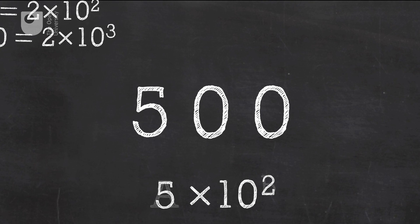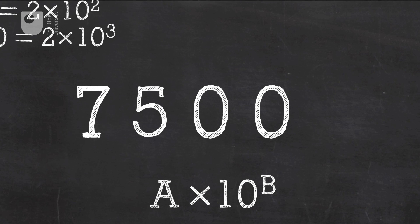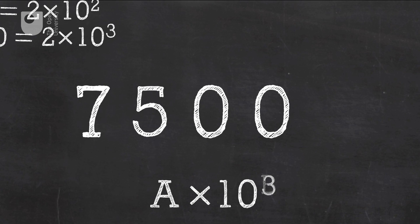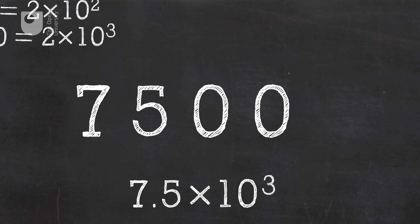How about writing the number 7,500 in scientific notation? This time the decimal point hops over three digits, so the number b is three. If we remove the zeros that the decimal point hopped over, we're left with 7.5, so the number a is 7.5. The number 7,500 can therefore be written in scientific notation as 7.5 times ten to the power of three.